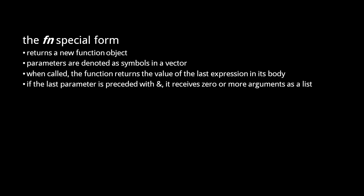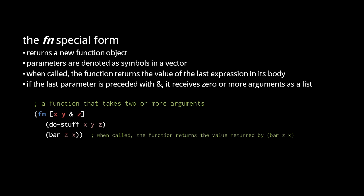Now, if the last parameter of a function is preceded by the symbol ampersand, then the function takes a variable number of arguments. So this example here is a function that takes two or more arguments. The last parameter, the so-called rest parameter, receives every argument past the second, bundled into an ordered collection. Here, ampersand precedes the only parameter, so the function takes zero or more arguments.